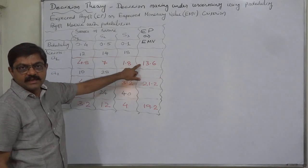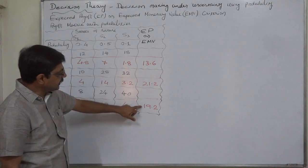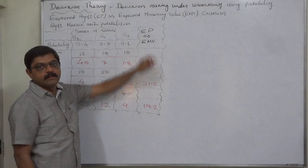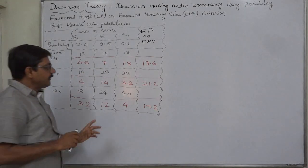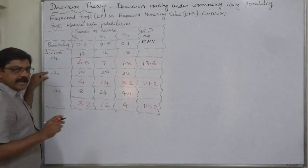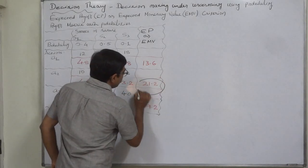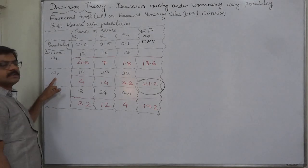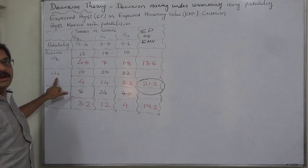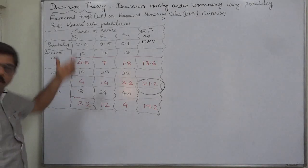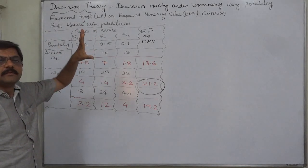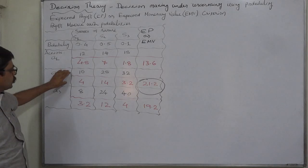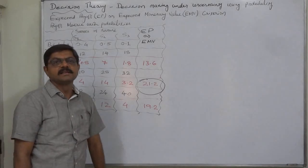These three values — 13.6, 21.2, and 19.2 — are the expected values of payoff, called expected payoff or expected monetary value (EMV). The criterion is to select the action with the highest EP or EMV. Therefore, the decision maker should select alternative A2. This corresponds to the factory size decision: the decision maker should choose to create a medium-size factory.